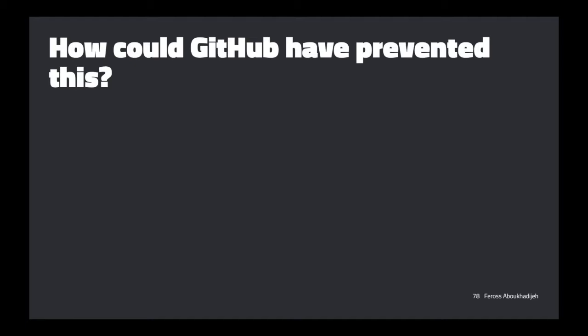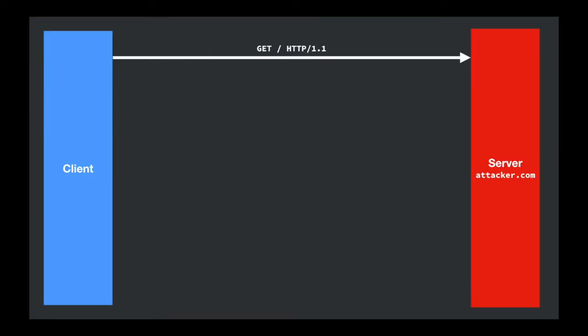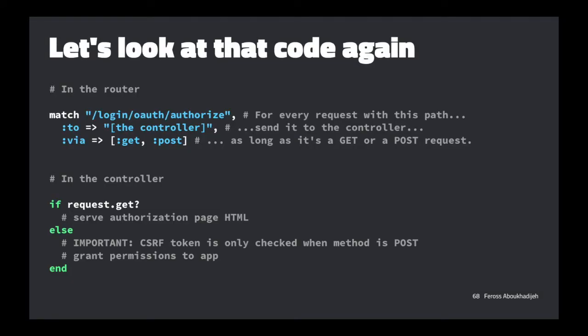How could GitHub have prevented this? One idea: instead of if/else, use if/else-if — check 'if request.get?' and 'else if request.post?' explicitly, and throw an exception if it's anything else. That's a great defensive coding practice: don't assume you know the two options are GET and POST. Be paranoid. The nice thing about crashing on unexpected input is you get an alert in production right away, you debug it, and you find the root cause immediately — much better than the silent bug GitHub had.